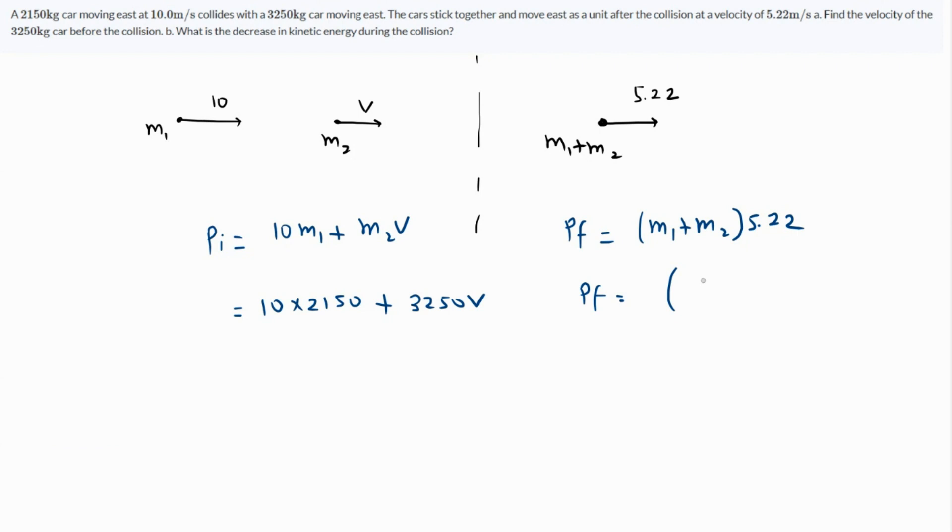So what is 2150 plus 3250? That's 5400, so that's 5400 times 5.22. Since the momentum is conserved, this means that p initial should be equal to p final, which means that 21500 plus 3250v should be equal to...